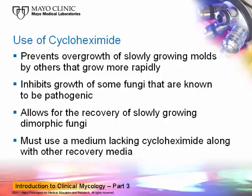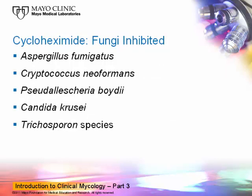There is a problem using cyclohexamide: certain pathogenic fungi may be inhibited by it, and it's necessary to use a medium that lacks that compound along with it. Examples of fungi inhibited by cyclohexamide include Aspergillus fumigatus, Cryptococcus neoformans, Pseudallescheria boydii, Candida krusei, and Trichosporon species. A new name has recently been introduced — Candida krusei is now called Pichia kudriavzevii — so if you see that name, know it's just a new name for Candida krusei.